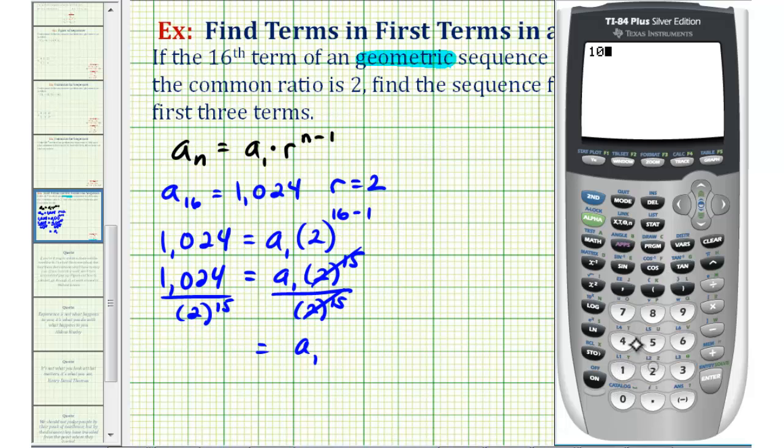We have 1024 divided by two raised to the power of 15. Let's go ahead and convert this to a fraction. So a sub one is equal to 1/32.